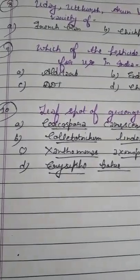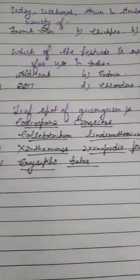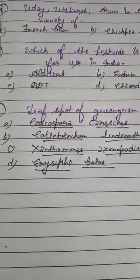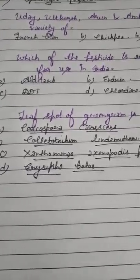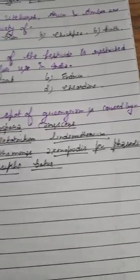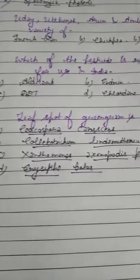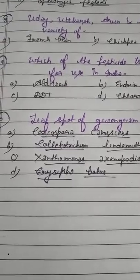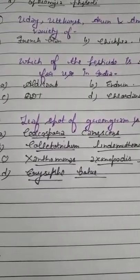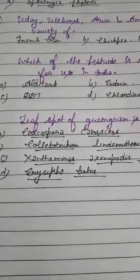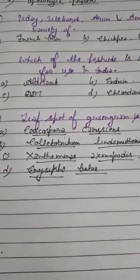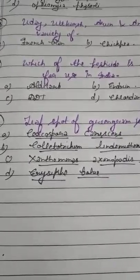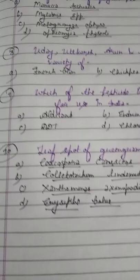Question number 10 — the last question: leaf spot of green gram is caused by? Option A: Cercospora canescens. Option B: Colletotrichum lindemuthianum. Option C: Xanthomonas axonopodis pv. phaseoli. Option D: Erysiphe betae. In leaf spot of groundnut, Cercospora causes Tikka disease. Similarly, Cercospora canescens causes leaf spot of green gram. Colletotrichum lindemuthianum causes anthracnose, and Erysiphe betae causes powdery mildew. The correct answer is option A: Cercospora canescens.